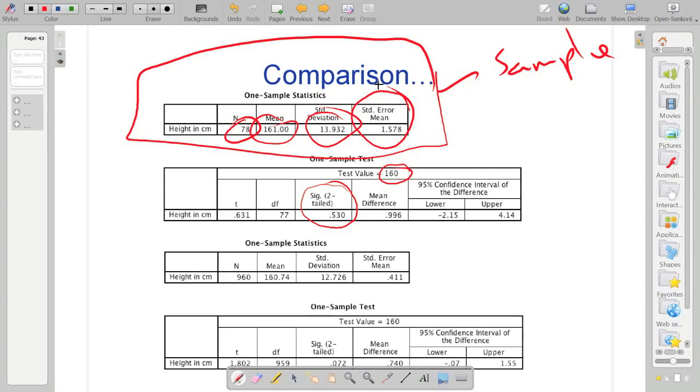And that's kind of an activity I'd like to get going on the QM Plus site, that we can all contribute to these ideas of discussion so that we all benefit from each other's thoughts. But then if I increase the sample size from 78 up to 960, you'll see here that the significance is now 0.072.